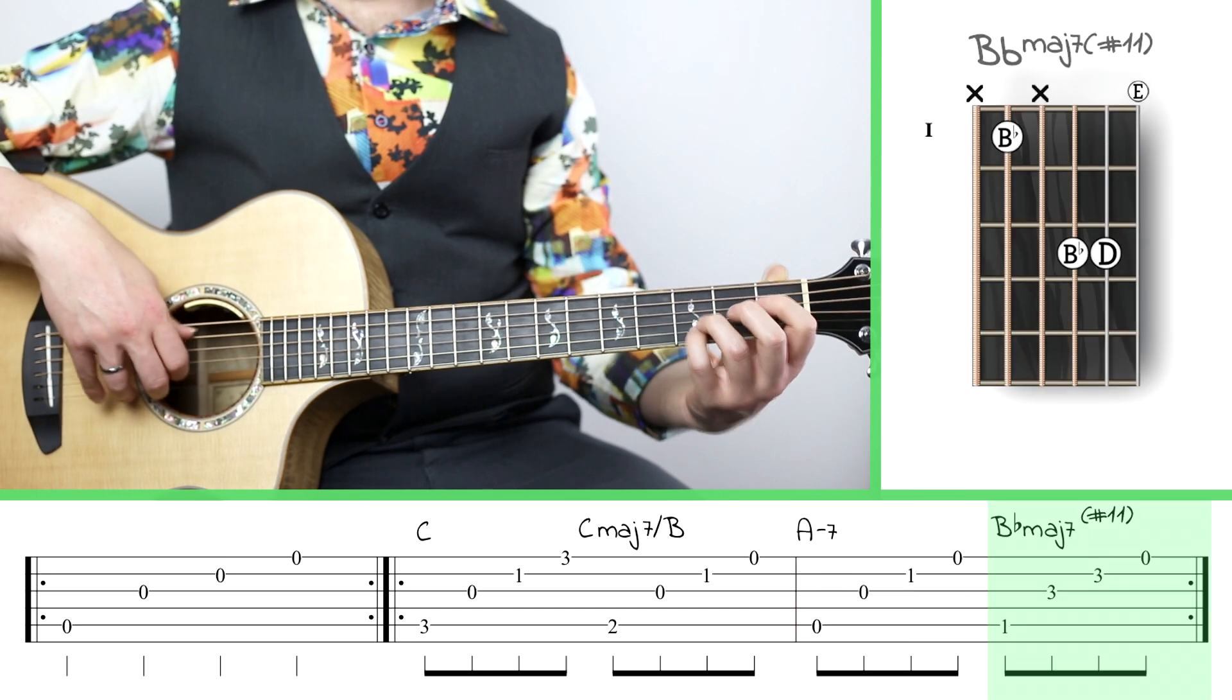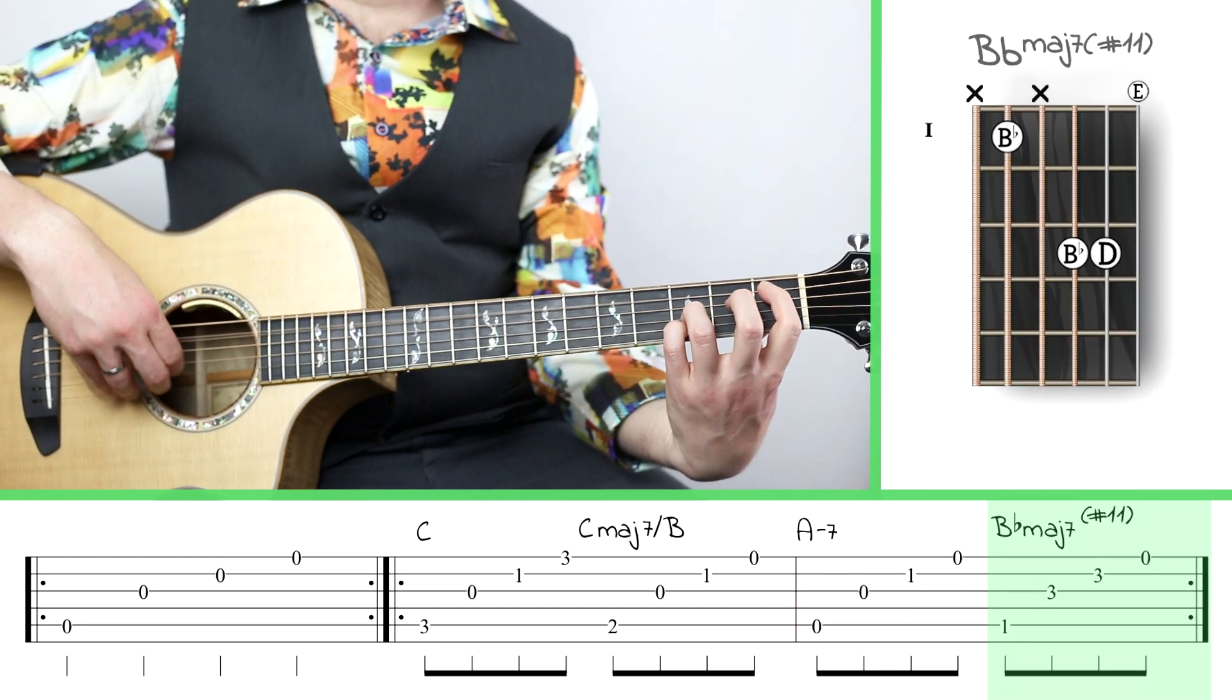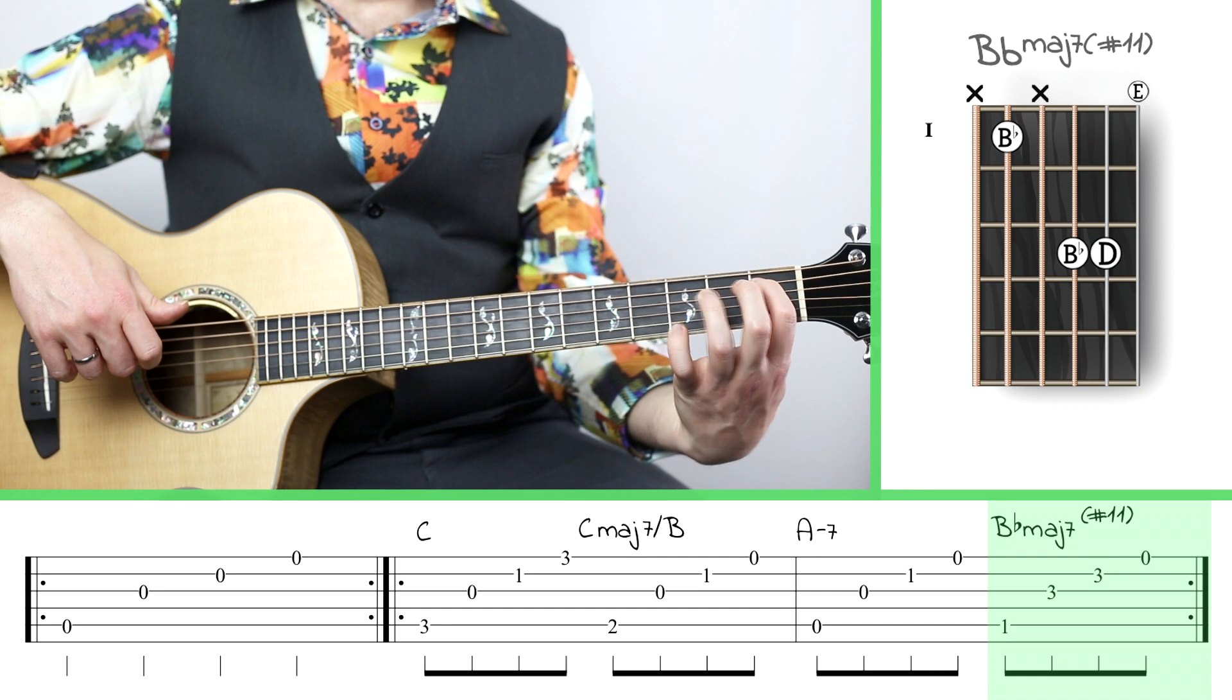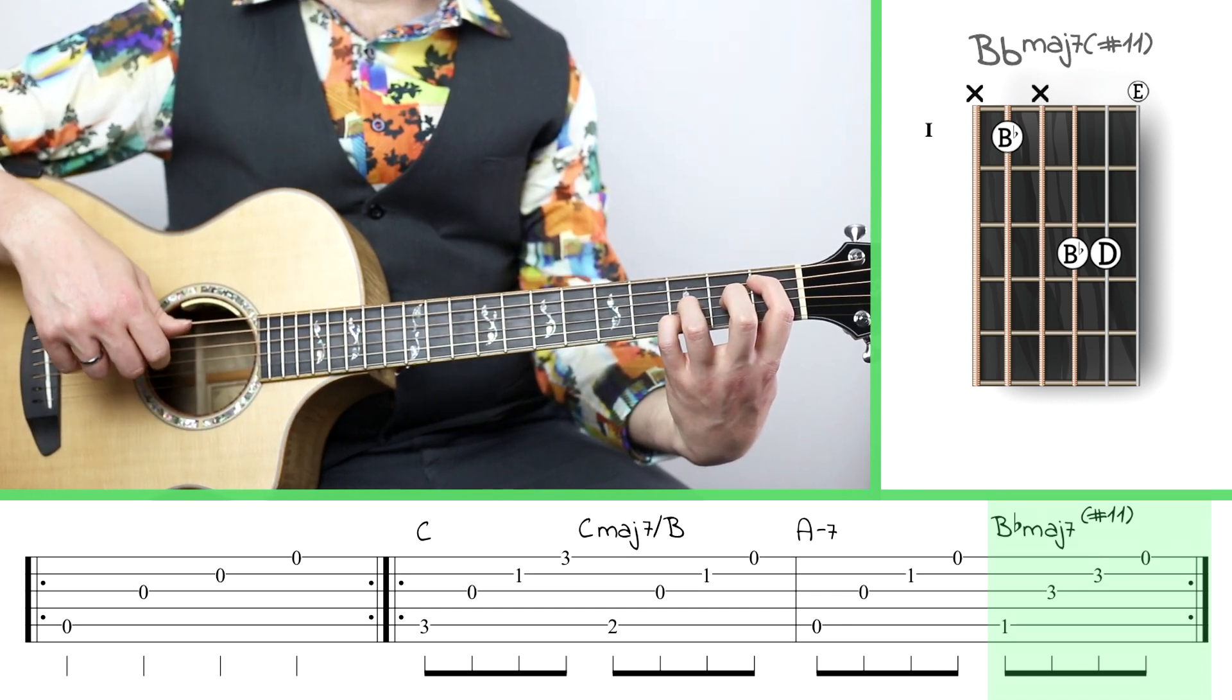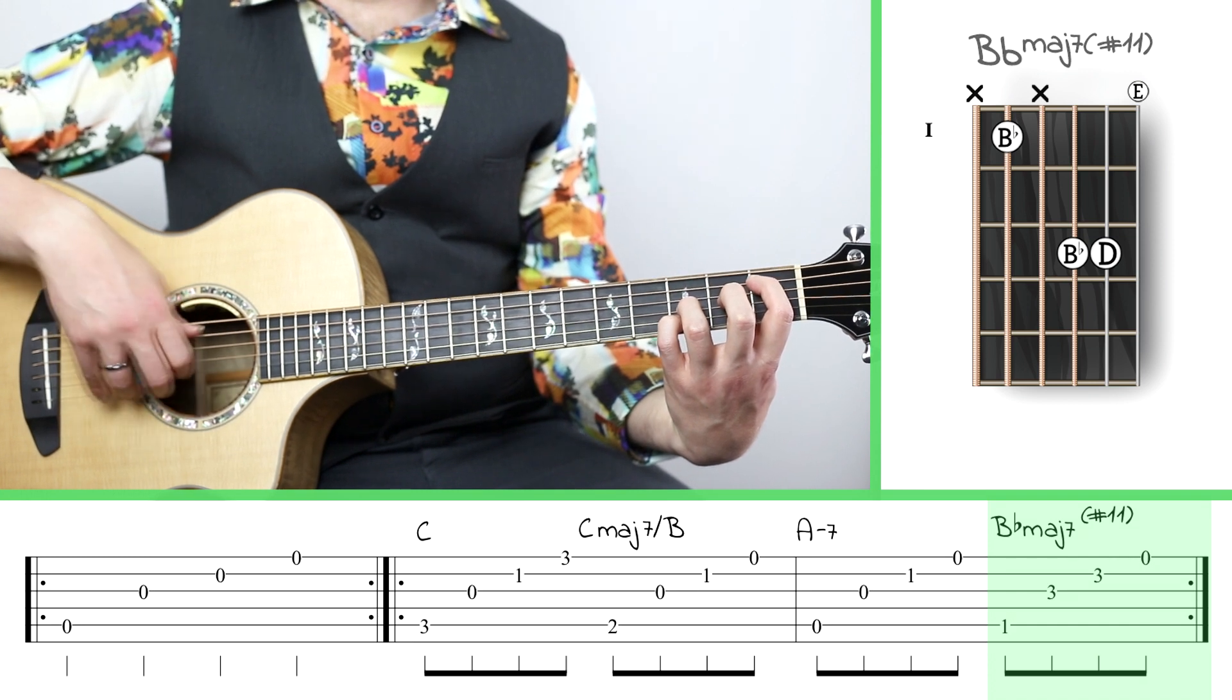Now the next chord's a little weird. It's a B flat kind of weird chord. So we've got to get our index finger on the first fret of the fifth string, and then our third and fourth fingers go on the third frets of strings three and two.